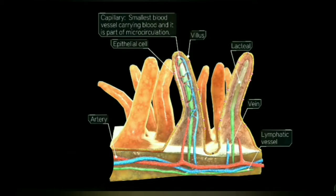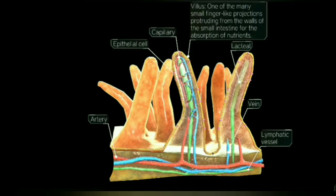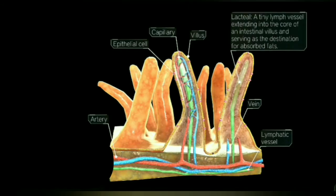Fourth one is villus. It is one of the many small finger-like projections protruding from the walls of the small intestine for the absorption of nutrients. Fifth one is lacteal. It is a tiny lymph vessel extending into the core of an intestinal villus and serving as the destination for absorption of fats.